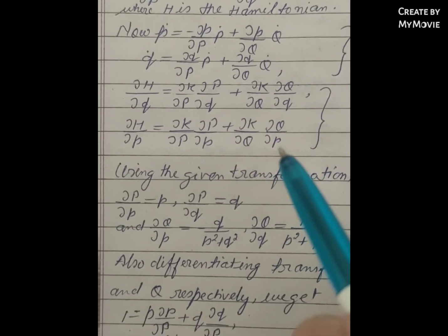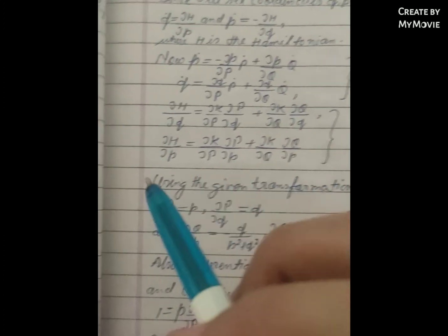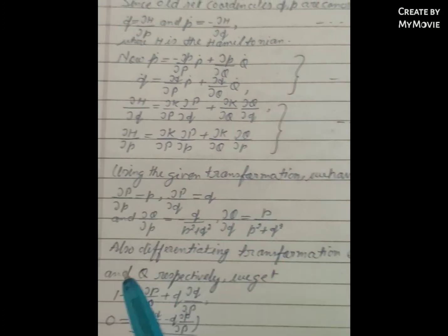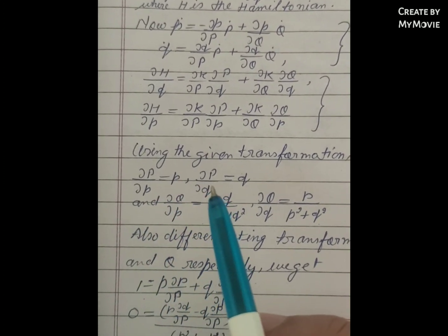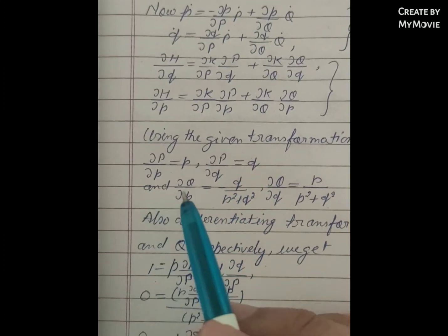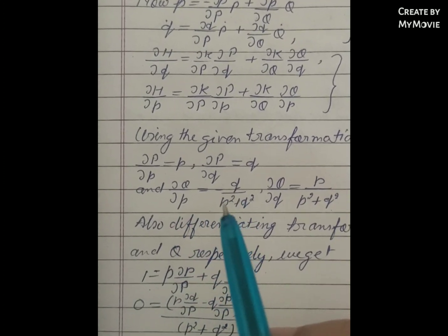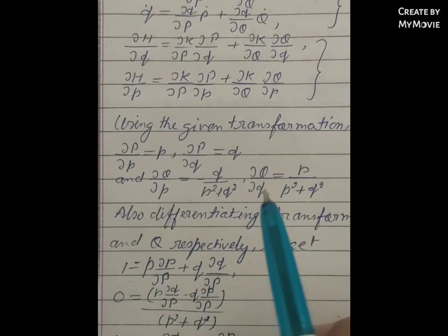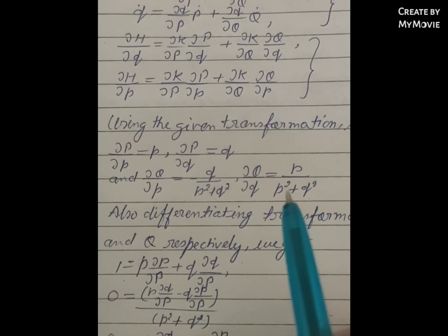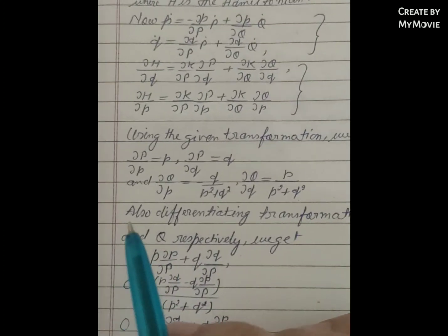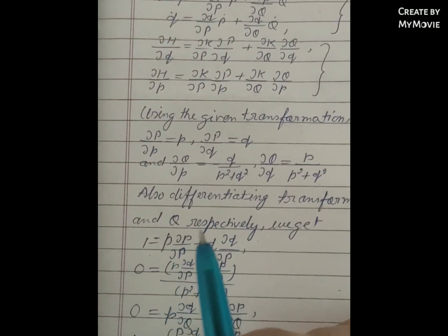Using the transformation, we have ∂P/∂p = p, ∂P/∂q = q, ∂Q/∂p = -q/(p² + q²), and ∂Q/∂q = p/(p² + q²). Also, differentiating the transformation equations with respect to p and q respectively.